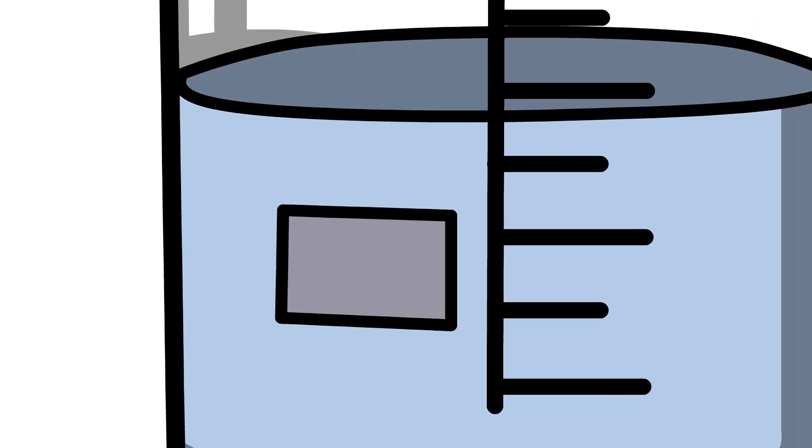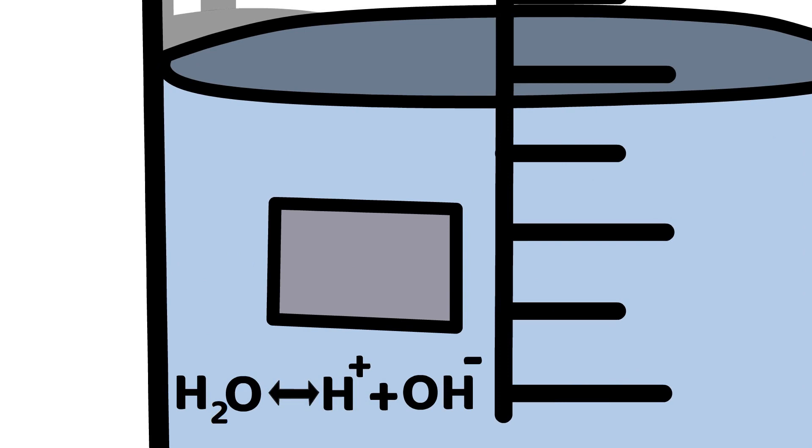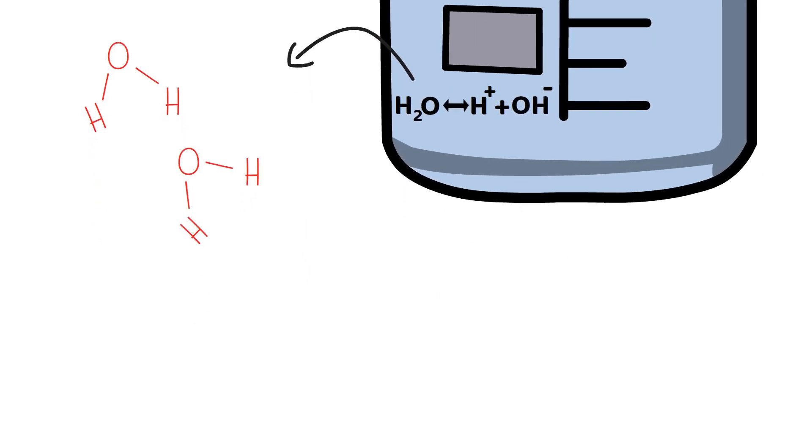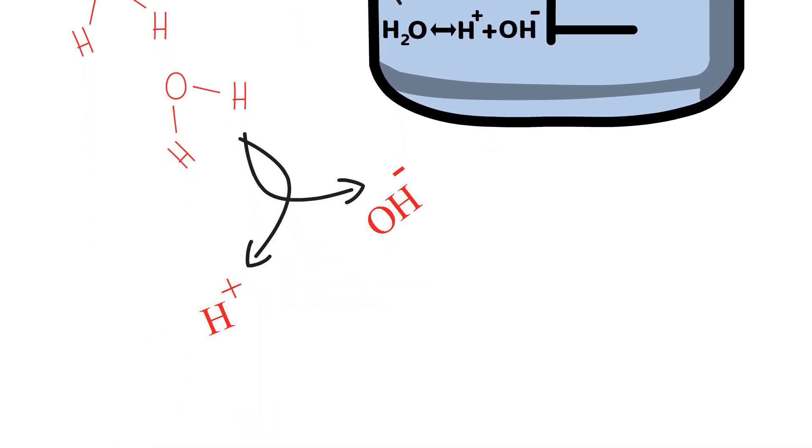The self-ionization of water is a continuous process when it is in pure form. In this process, when there is collision of two H2O molecules, they dissociate into H+ and OH- ions.